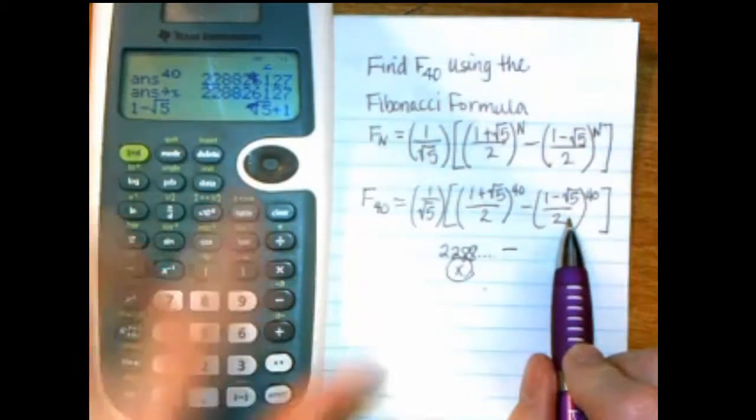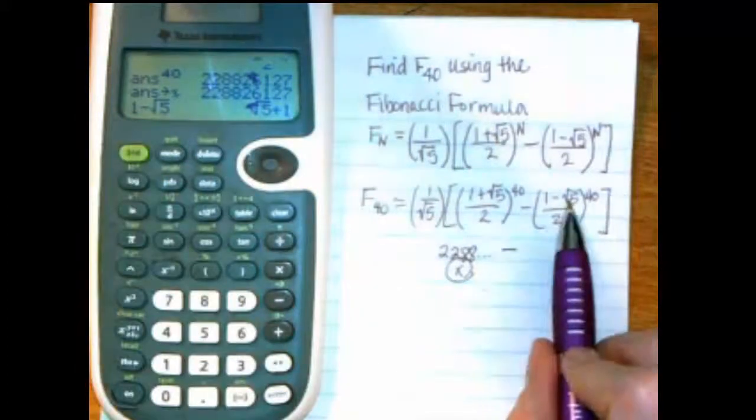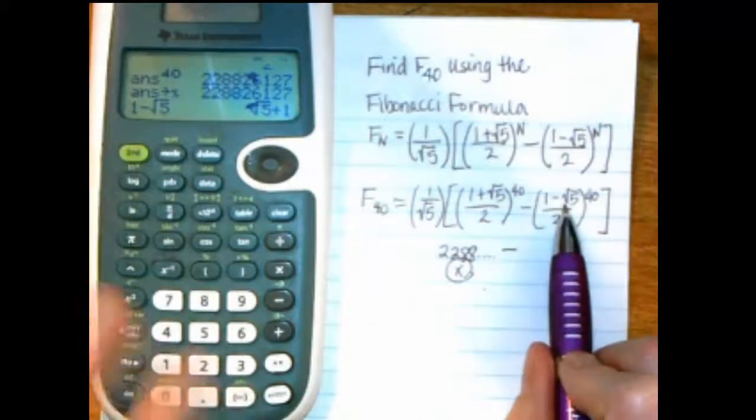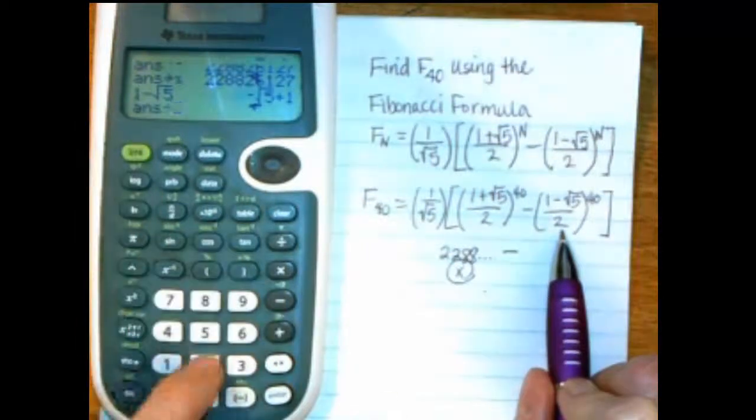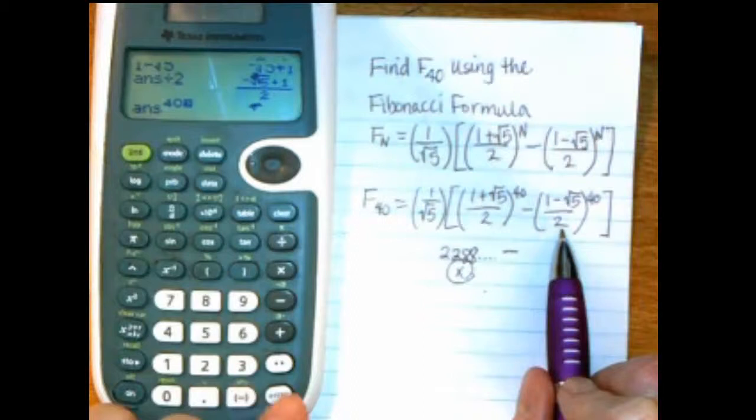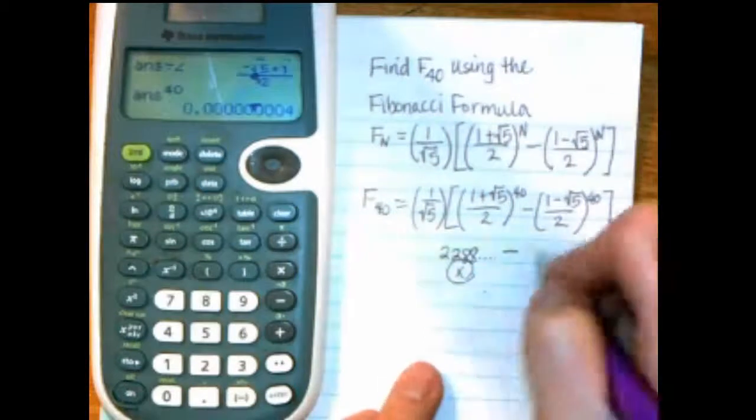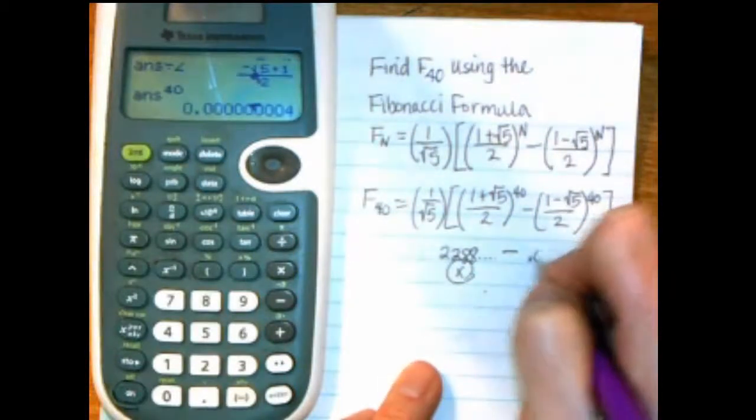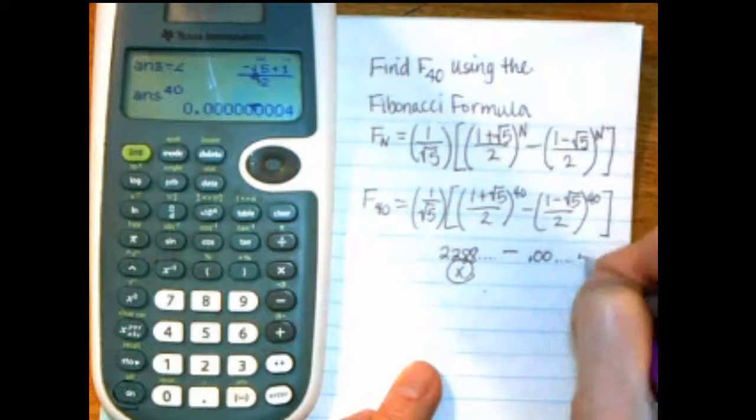Oh, and I think there's a negative under my inkblot. So it's negative square root of 5 plus 1. It changed the order. And then I want to divide by 2, and then raise it to the 40th power. And I get 0.00, lots of zeros, and then a 4 eventually.